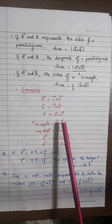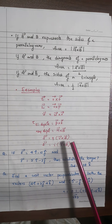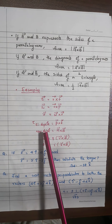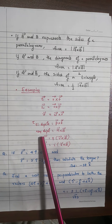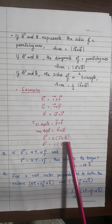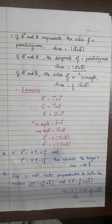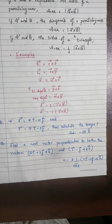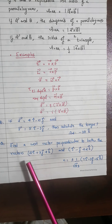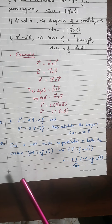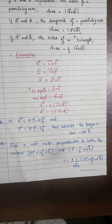Many examples of cross product appear in plus-one and plus-two physics: torque, angular momentum, velocity under circular motion, torque on an electric dipole in an electric field, torque on a magnetic dipole in a magnetic field, and force on a charged particle in a magnetic field. A key question: find a unit vector perpendicular to both A and B. The answer is n̂ = (A × B) / |A × B|.